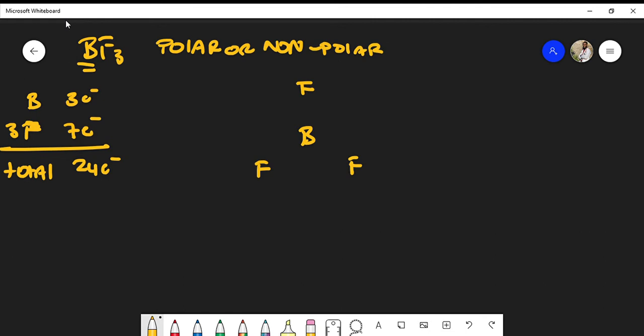In this case I could form a single bond between boron and fluorine. I could also do the same here and I also could do the same here.